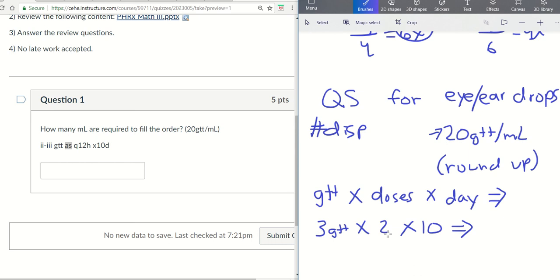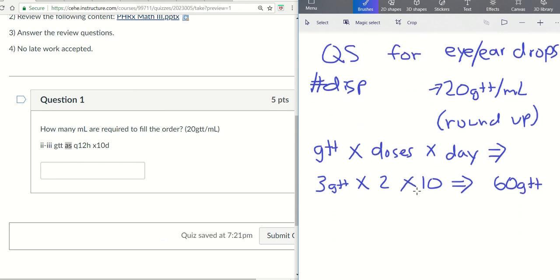So 3 times 2 times 10 is 60 drops. So for 10 days, they require a minimum of 60 drops. Once we figure out the amount of drops they require, we'll divide by the conversion factor to get our ml's.